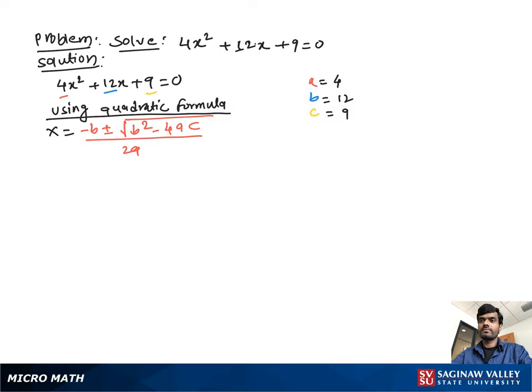Now, using quadratic formula, x equal to negative b plus minus square root of b square minus 4ac over 2a. Now, substituting the value of a, b, c in this equation, we get x equal to negative 12 plus minus square root 12 square minus 4 times 4 times 9 over 2 times 4.